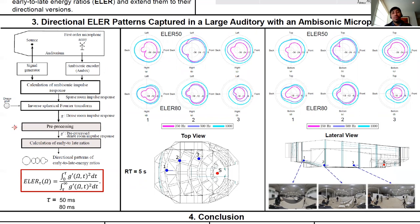Detailed information about pre-processing can be found in the manuscript and the calculation of the early to late energy ratios is performed according to the formula in the red box.